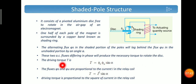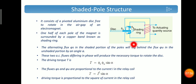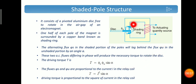The driving torque T is proportional to phi-s · phi-u · sin(α). The fluxes phi-s and phi-u are both proportional to the current I in the relay coil, so the torque is proportional to I² · sin(α). Therefore, the driving torque is proportional to the current squared, and it does not depend on the direction of the current.